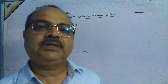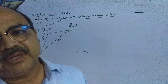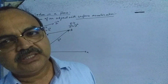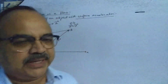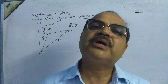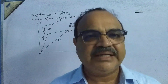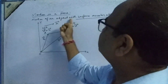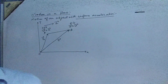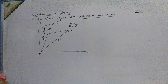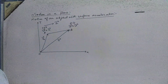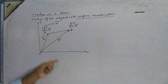Good evening students. In our last class we completed vectors, and in that chapter we are discussing today — motion in a plane. Our discussion today is regarding the motion of an object with uniform acceleration. The object is moving in a plane with uniform acceleration.